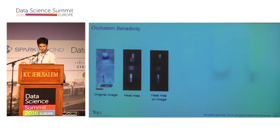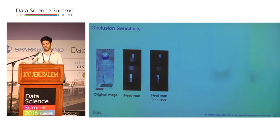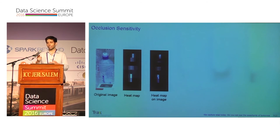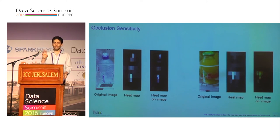For example, the original image is a bottle of water. On its right you can see the heat map, and we merge it with the image to show only the part the network found important. In this case, the bottle cap and the logo are the most significant parts. Here is an additional example of an orange juice bottle, where the flower in the center is the most important part for the network.